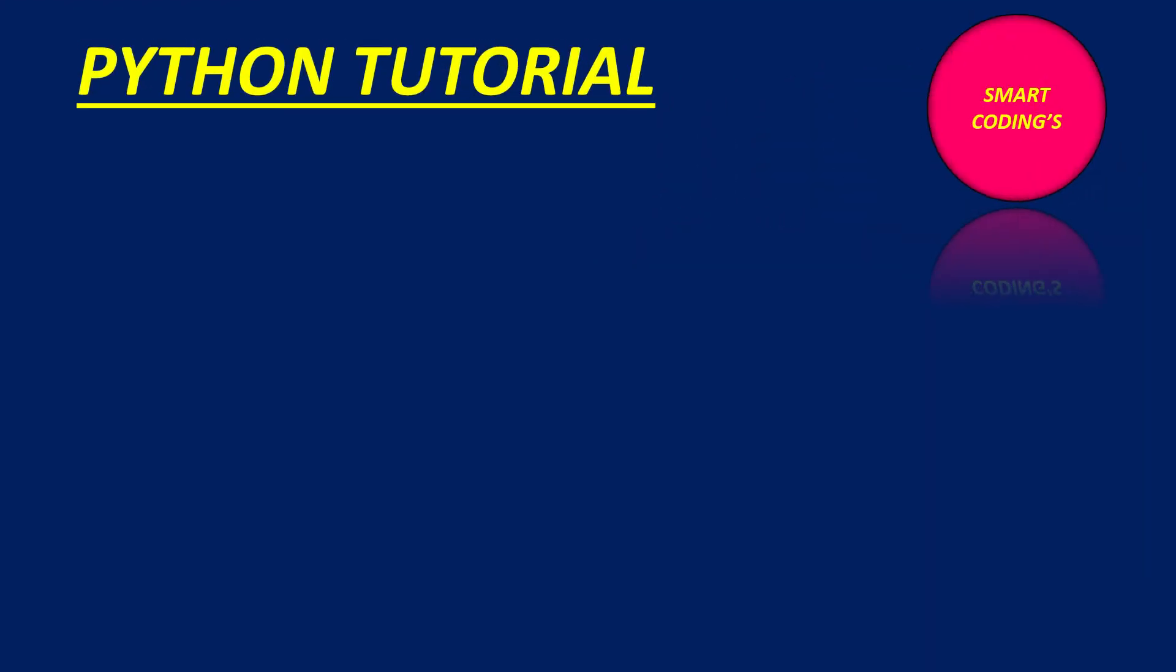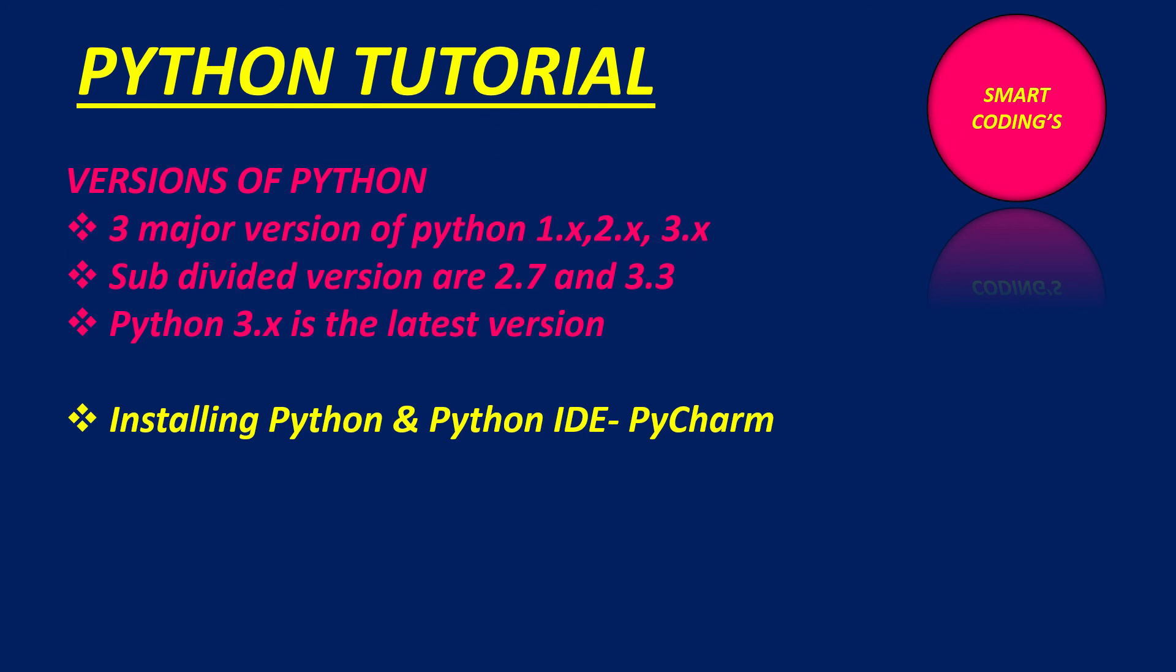Next is, Python has basic versions. There are basic three versions of Python: 1, 2 and 3. 1.x, 2.x and 3.x. Again, this 1.x, 2.x and 3.x is divided into subversions, that is 2.7 and 3.3. Now, the most common version is, the latest version is 3.x. That is, Python 3 is the latest version, in which all other versions can work.